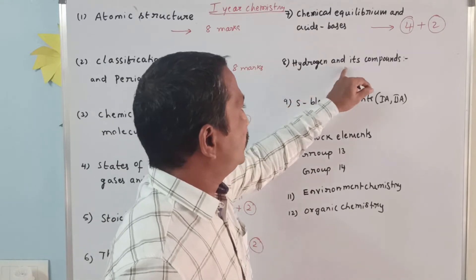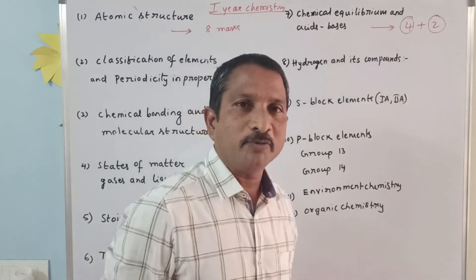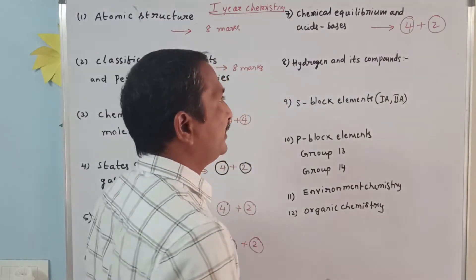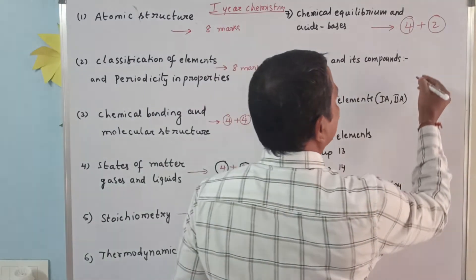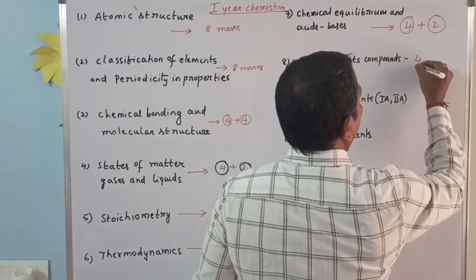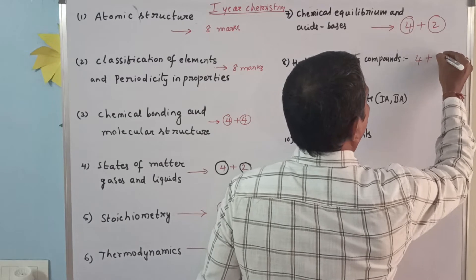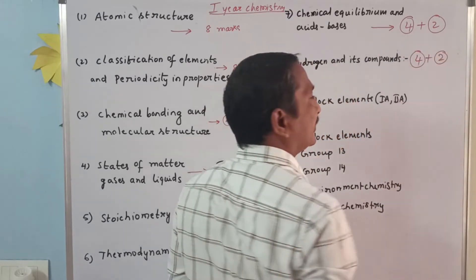Eighth unit: hydrogen and its compounds. Again, the weightage is six marks. There is one four-mark question and one two-mark question.